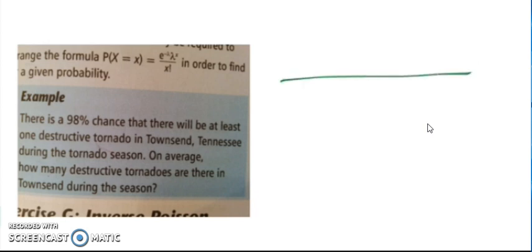But let's look at this example. So we need to remember that Poisson starts, could be 0, 1, 2, 3, all the way up to infinity.